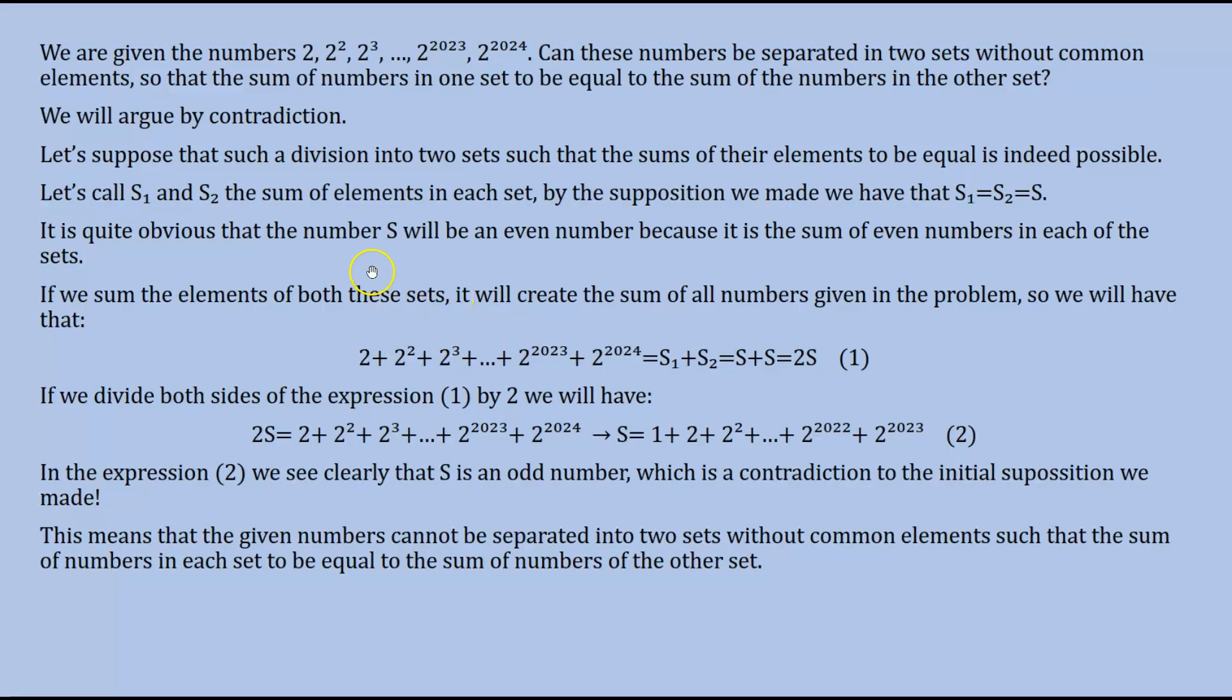Now, if we sum the elements of these sets, it will create the sum of all the numbers of the initial set given in the problem. So we will have that elements of set 1 plus elements of set 2 will be 2 plus 2 to the power 2, 2 to the power 3, plus 2 to the power 24.